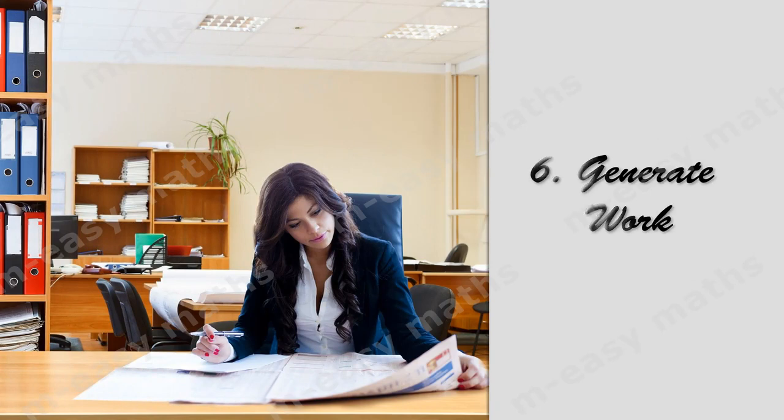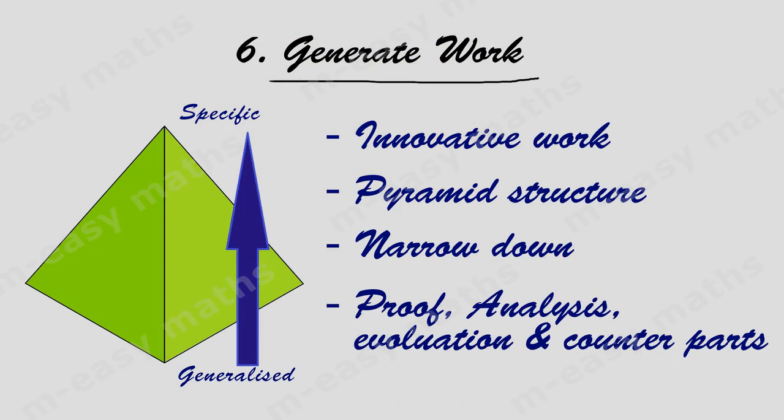Step 6 is to generate work — this is the heart of your work. Based on the cited resources, develop an innovative work. Move across the pyramid structure so that information moves from a generalized state to the specific work. Narrow down the innovative work with citations. The innovative work must be supported with proof, analysis, evaluation, and counterpart.